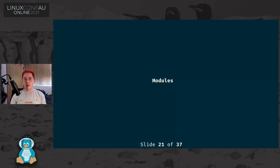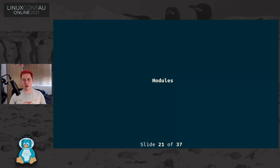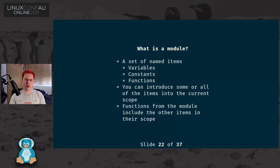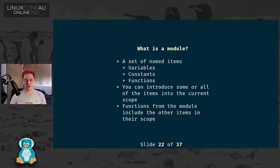Another thing that's particularly useful is modules - being able to encapsulate a set of things from our programming language that we can reuse in multiple cases elsewhere, in a way that we don't have to worry about how those modules are implemented. Nothing aside from the public interface of those modules will leak out. A module is a set of named items: names referring to variables, constants, and functions. You could say, take this module and add all of its contents or some subset to my current scope, possibly inside another module or even within a single function call for the duration of that function.